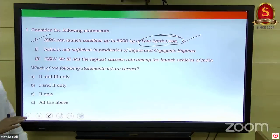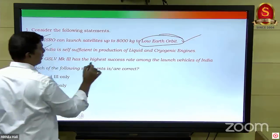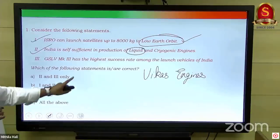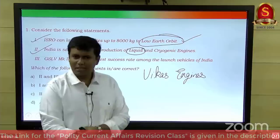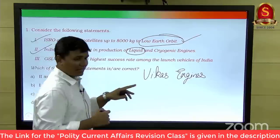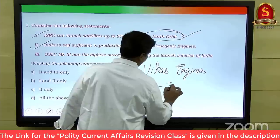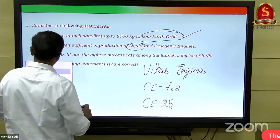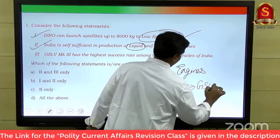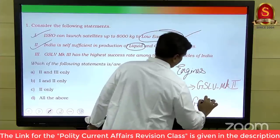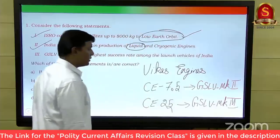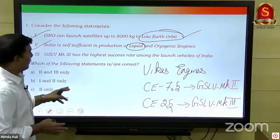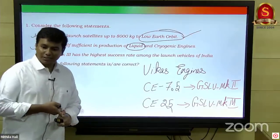Second statement: India is self-sufficient in the production of liquid and cryogenic engines — this is also correct. The liquid engines developed by India are called Vikas engines, first integrated in PSLV. India is self-sufficient in liquid engines. For cryogenic engines, India has two: CE-7.5 and CE-20 (also called CE-25). CE-7.5 operates in GSLV Mark 2, and CE-20 operates in GSLV Mark 3. India has self-sufficient capabilities to domestically produce both, even though they were inspired by the Russian model. So the second statement is correct.